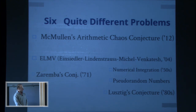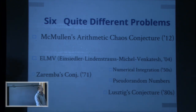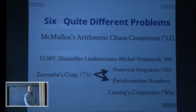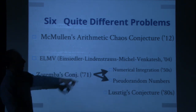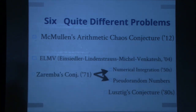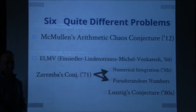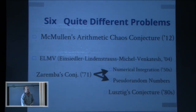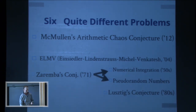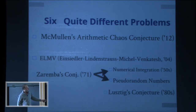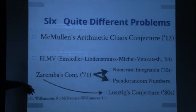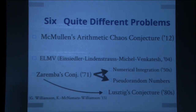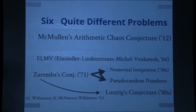Here are six problems that I'll try to explain. The six are already interconnected: Zaremba's conjecture was invented to solve the numerical integration problem, which people quickly realized had application to pseudorandom numbers. More recently, in joint work with Jordy Williamson and Peter McNamara, we connected Zaremba's problem to Lusztig's conjecture.